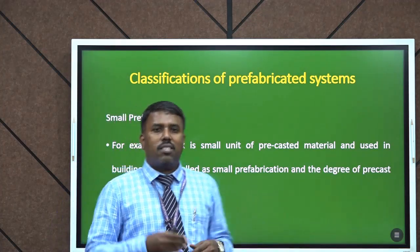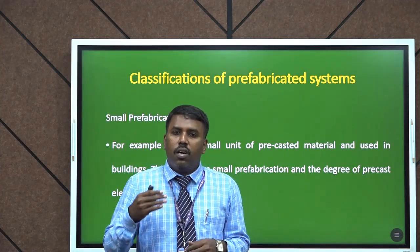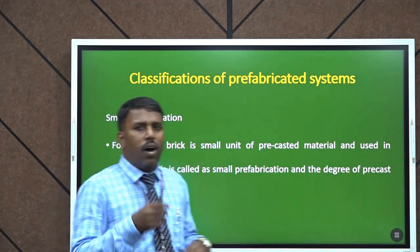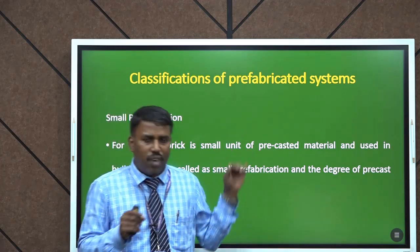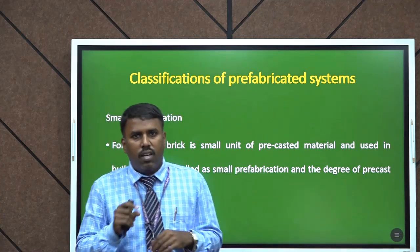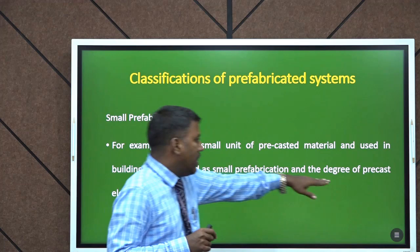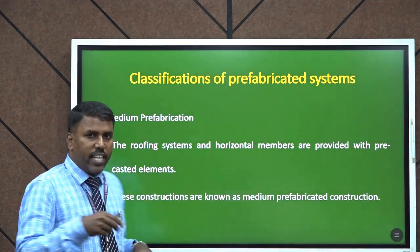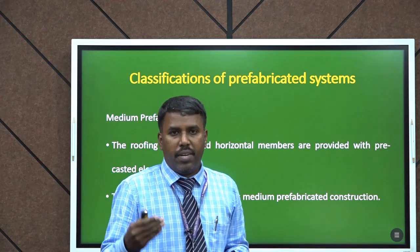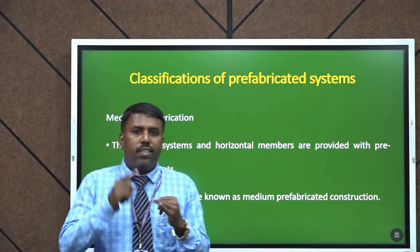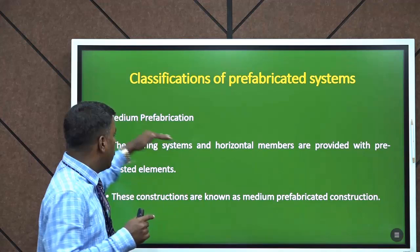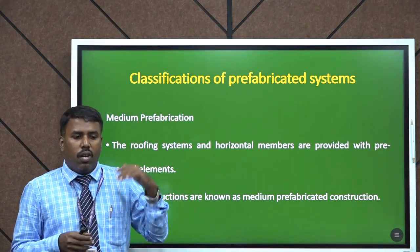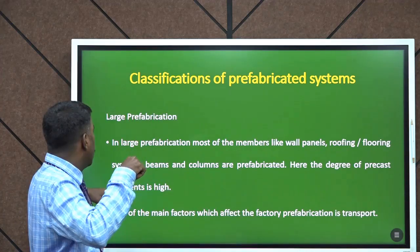Next is the classification of prefabricated systems. The first one is small prefabrication. A simple example of small prefabrication is a brick, where the degree of precast element is very low. The next one is medium prefabrication, where roofing and flooring systems are included. Here the degree of precast element is medium.